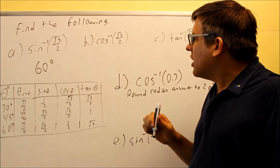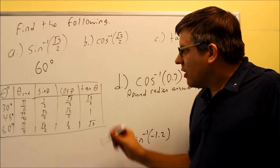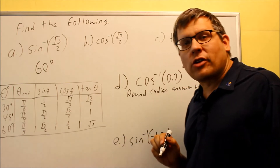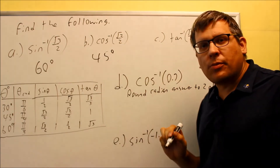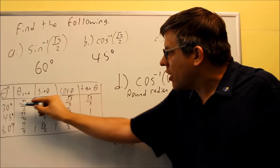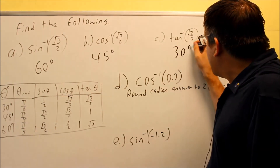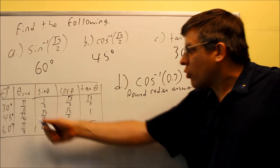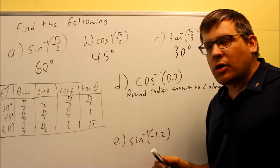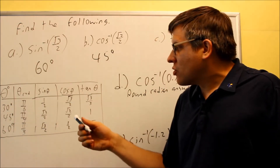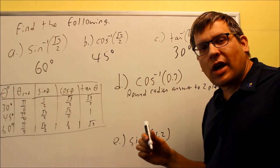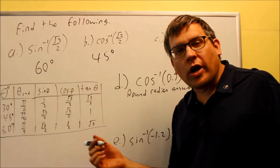For part C, inverse tangent of square root of 3 over 3 — in the tangent column, root 3 over 3 corresponds to 30 degrees. Keep in mind you could also write all answers in radians. The question didn't specify, so you could write either. Whether in radians or degrees, you get the same trig values. Make sure you read the directions carefully to see whether the answer is wanted in radians or degrees.